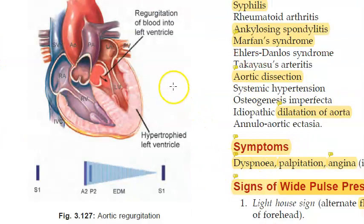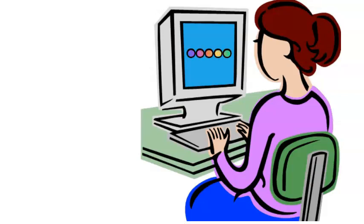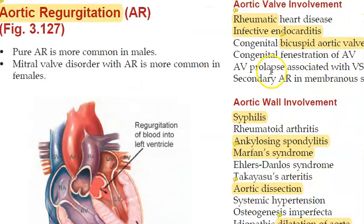Let's listen to aortic regurgitation — that was interesting, did you make out the early diastolic murmur? Now let's continue with the causes of aortic regurgitation.